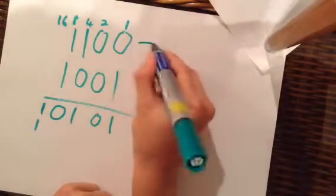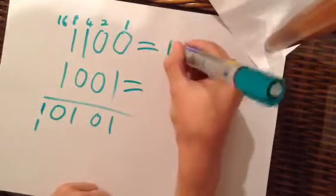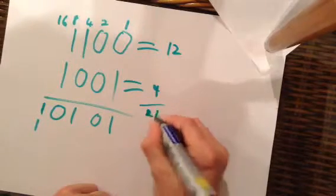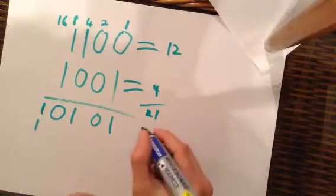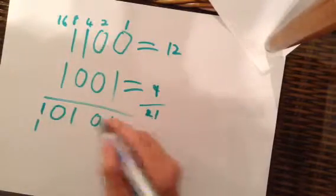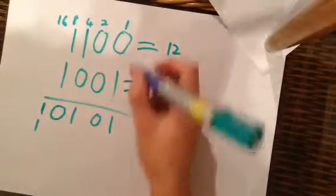To figure if you've actually gotten it right in decimal, then you have to figure out what your numbers actually equal. I know mine equal 12 and 9, and that equals 21. So if 21 is what that has to equal, let's find out.